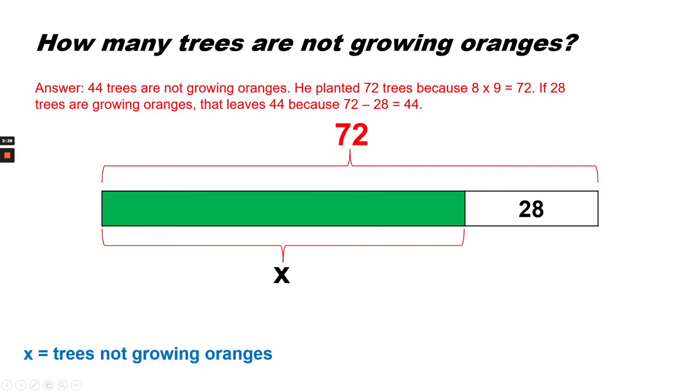So what is X? X is the difference between 72 and 28. 44 trees are not growing oranges. He planted 72 trees because eight times nine is 72, and if he has 28 trees that are growing oranges, that'll leave 44 because 72 minus 28 equals 44.